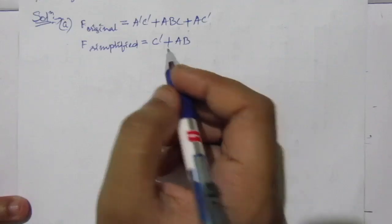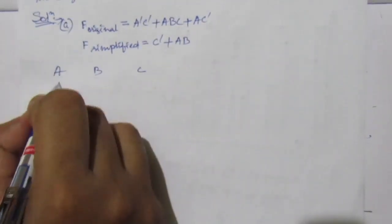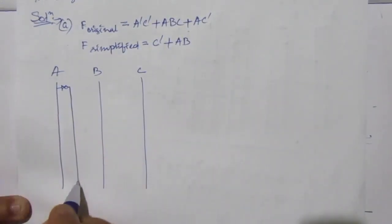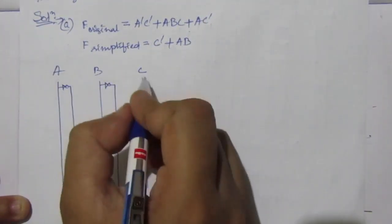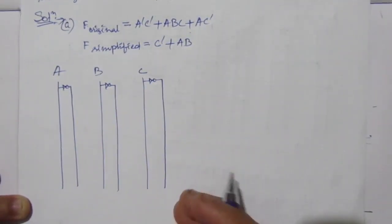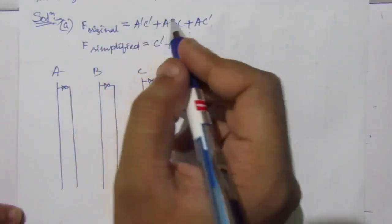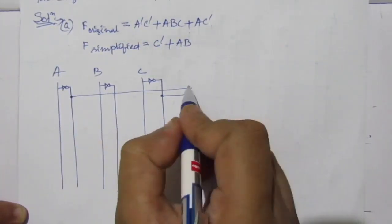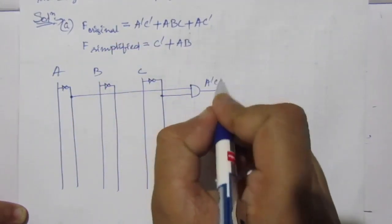For drawing the logic diagram, we have three input variables: a, b, and c. We use a NOT gate to get ā, another inverter to get b̄, and another NOT gate to get c̄. Inverter and NOT gate are the same. The first term of the original expression is ā·c̄. Since ā is from the first inverter and c̄ is from the third, we use an AND gate to get ā·c̄.